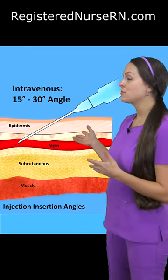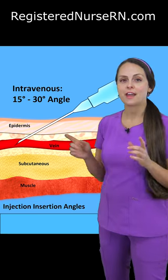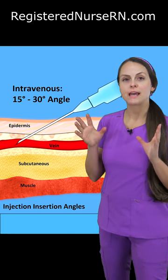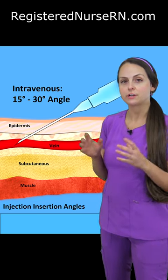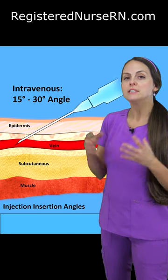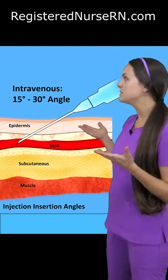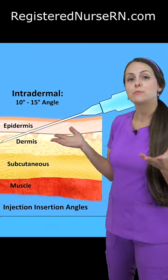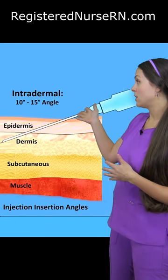Then we have intravenous. We're targeting the vein, and you want to go in anywhere between a 15 to 30-degree angle, depending on how deep that vein is. And then lastly we have intradermal.